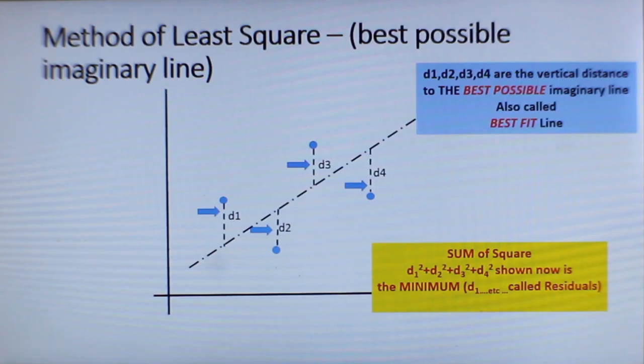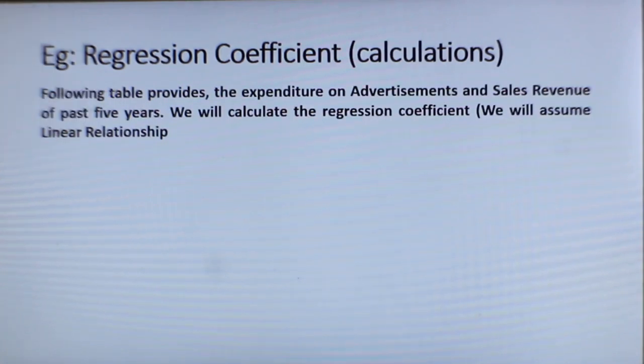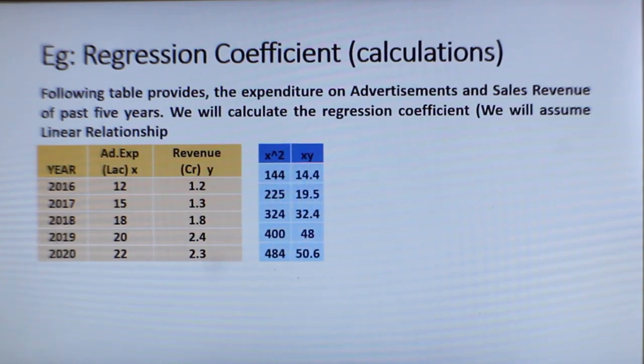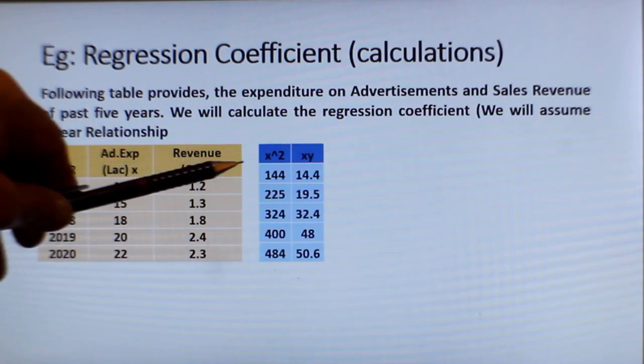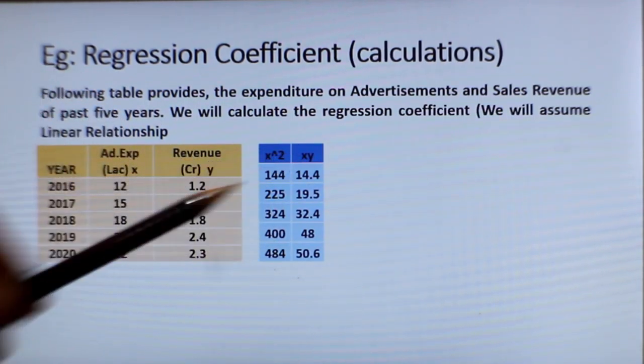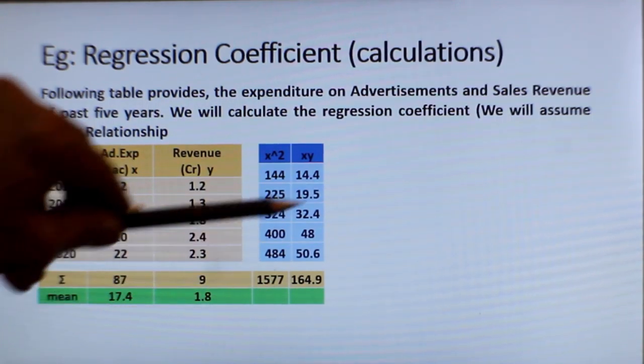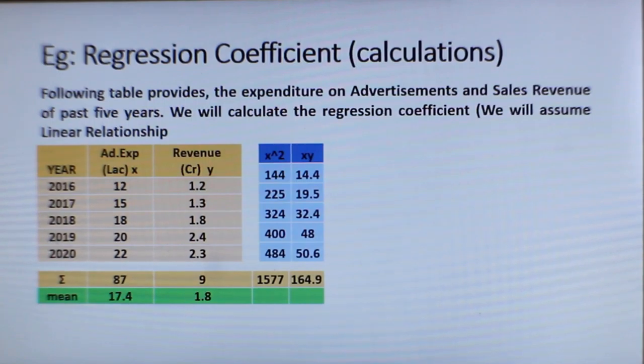We will take a couple of examples. Following table will provide the expenditure on advertisement and sales revenue for the past 5 years. We will calculate the regression coefficient, which is basically the slope of the line and also the y-intercept. These are all the data, the advertisement expenses in lakhs and revenue for these years. We already said that we can build a table. If you look back, all you need is x square and xy and then summation of that. And this is what all the elements that you require to put into the formula to arrive at the regression coefficient.